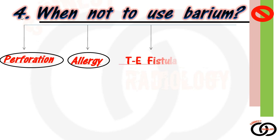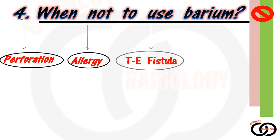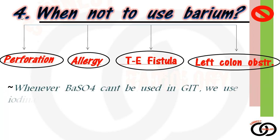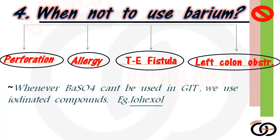The third contraindication is tracheoesophageal fistula, for similar reasons — as there is a connection between the trachea and esophagus, barium can enter the airway. The fourth contraindication is left colon obstruction, as barium can form a complex with feces and aggravate the obstruction. Wherever barium sulfate cannot be used in the GIT, we use iodinated compounds instead — for example, in case of perforation or tracheoesophageal fistula, we use an iodine-based contrast.